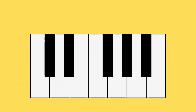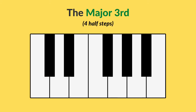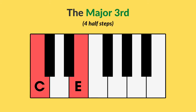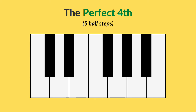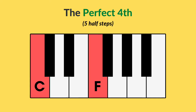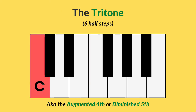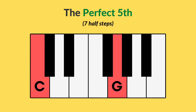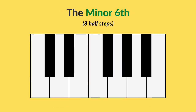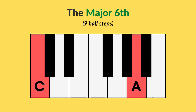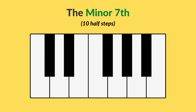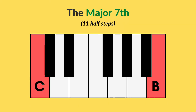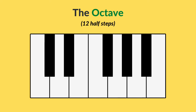There are a lot of intervals. For example, the minor third, the major third, the perfect fourth, the tritone, the perfect fifth, the minor sixth, the major sixth, the minor seventh, the major seventh, and the octave.